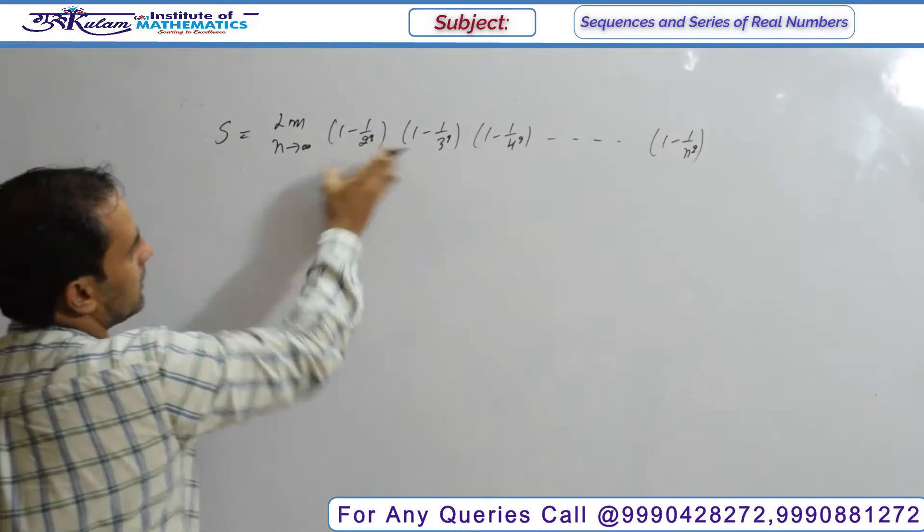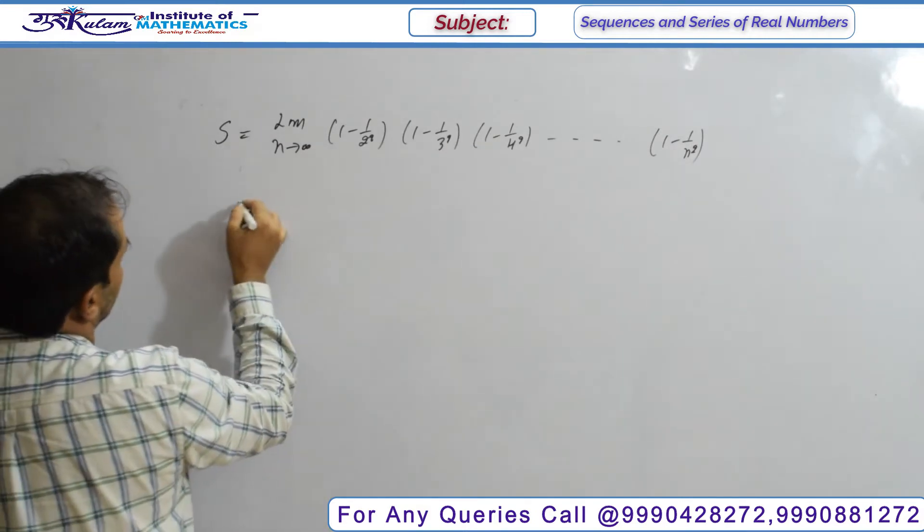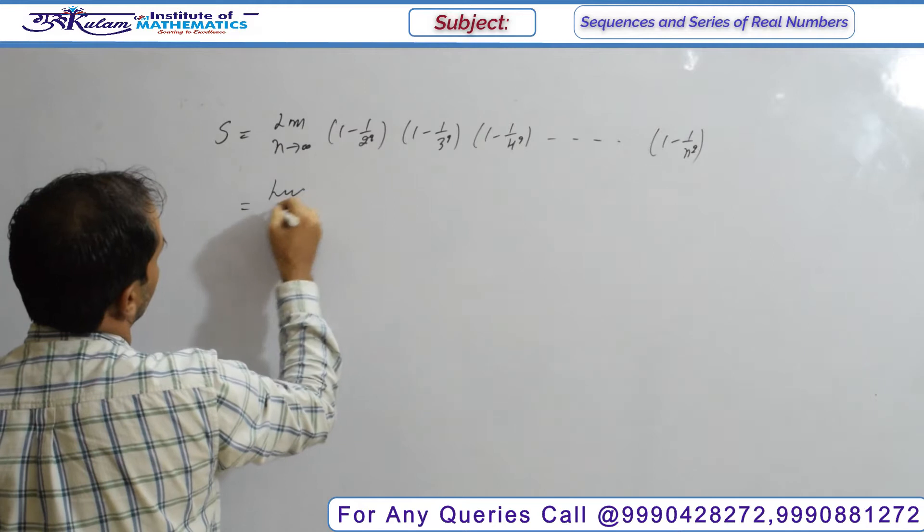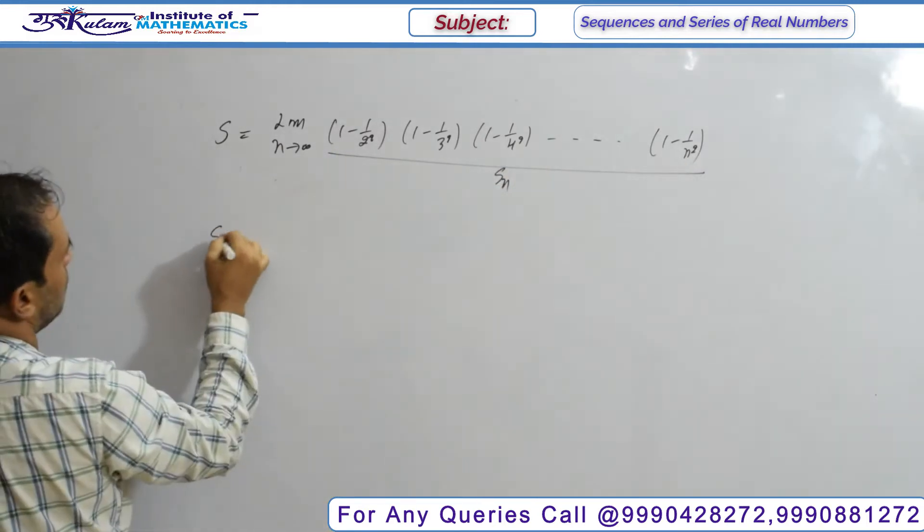We need to find the value of this product as n tends to infinity. Simply, I can write this as limit n tends to infinity S of n, which I can write using the a² - b² formula.